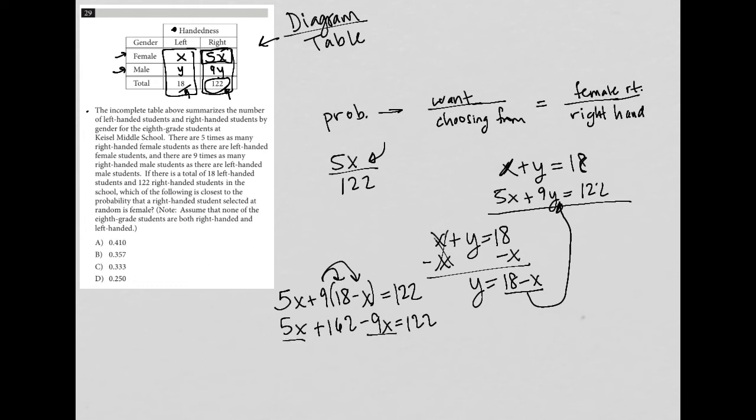Combining like terms here, 5X minus 9X is negative 4X. I'm going to also subtract 162 from both sides. So I'm left with negative 4X equals 122 minus 162, which is negative 40. And dividing both sides by negative 4, I end up with X is equal to 10.